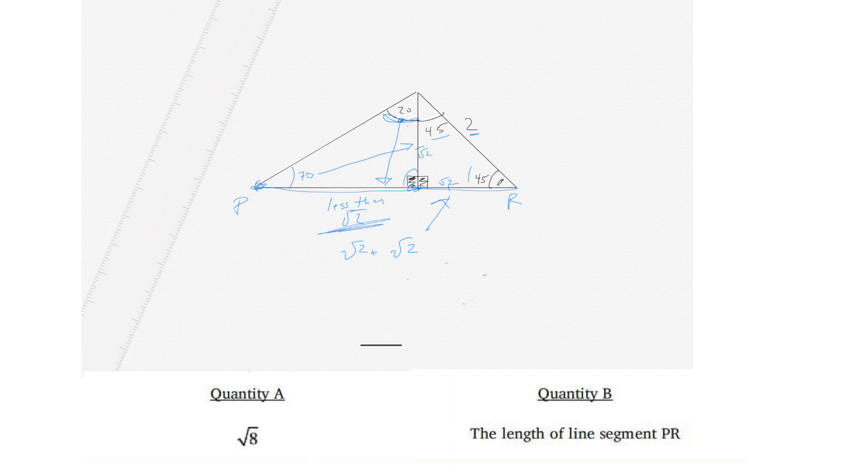Well, for now we'll just call it square root of 2 plus square root of 2, but we know it's a little bit less than that. So that equals 2 times the square root of 2. So PR is a little bit less than 2 times the square root of 2.